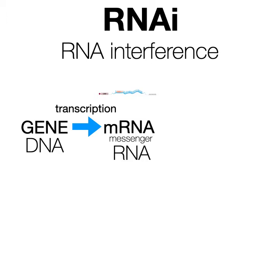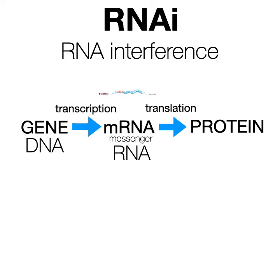By making lots of this mRNA, or a little of this mRNA, you can regulate how much of the protein gets made from it. The protein gets made in a process called translation, where that mRNA is used by protein-making complexes called ribosomes. They follow the instructions in that mRNA to make the corresponding protein, which is made up of amino acids — like the protein letters.